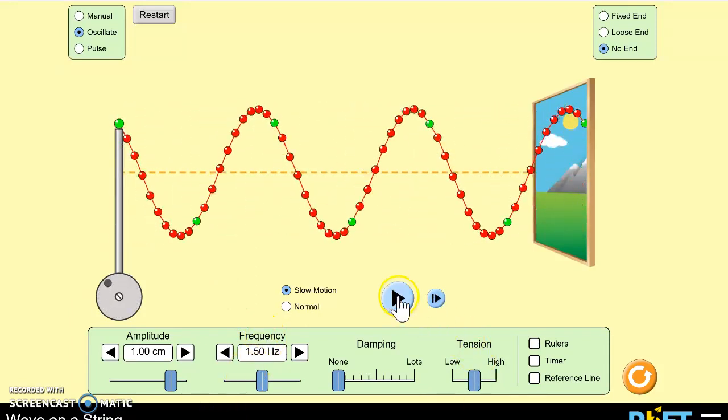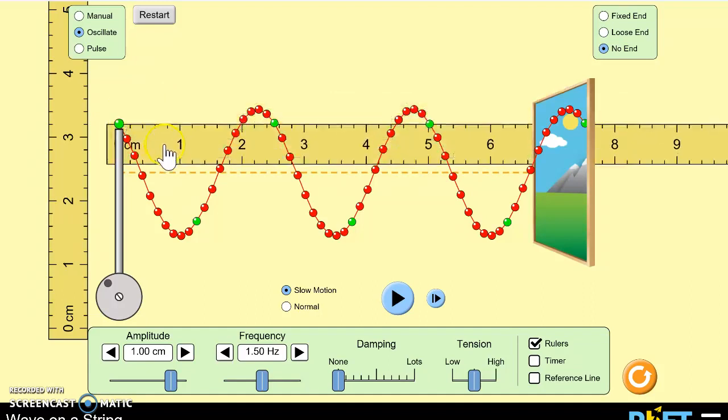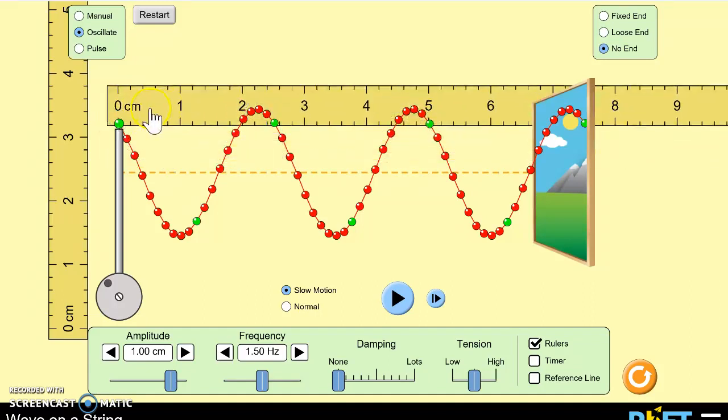So if I pause, I could look at the displacement of every single particle on the string. We can quantify that type of analysis by getting some rulers. This first particle, its equilibrium position is located at zero centimeters. This particle right here is located at about one centimeter. This particle is the one located at two centimeters and so forth.